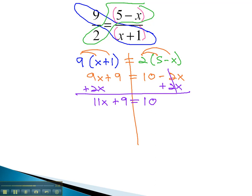And now we can start moving away from the x by subtracting 9 from both sides. 11x equals 1, and then finally dividing both sides by 11 to get x is 1 over 11, or if we want a decimal, we can round it to 0.0909.